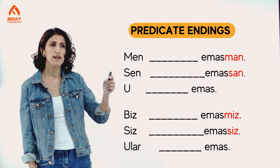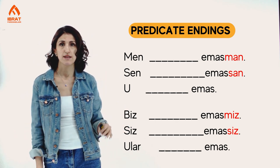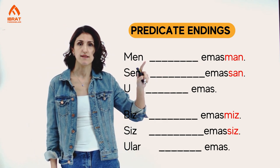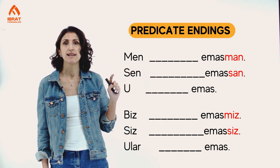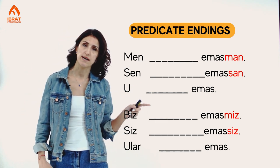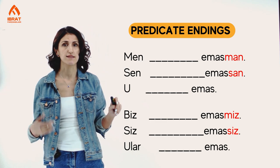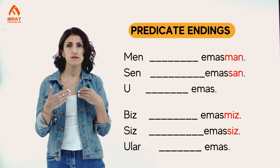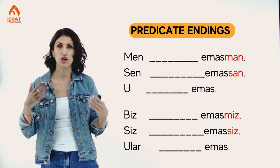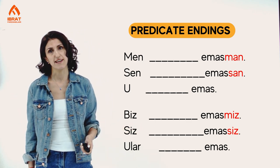Negative form: men hafa emasman, sen hafa emasen, u hafa emas, biz hafa emasmus, siz hafa emasSiz, ular hafa emas.